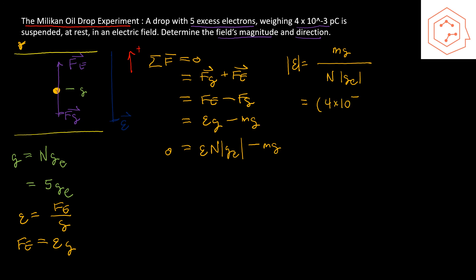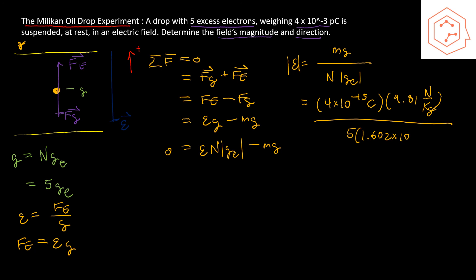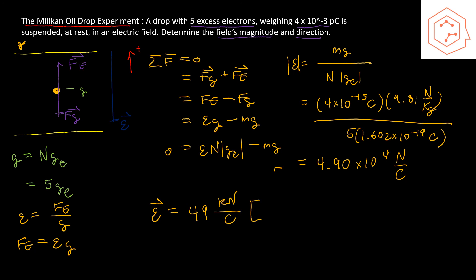Substituting values: the mass is 4 × 10⁻¹⁵ kg (since a picocoulomb is × 10⁻¹² — note this is the weight expressed as 4 × 10⁻¹⁵ in appropriate units), multiplied by 9.81 N/kg, divided by 5 × 1.602 × 10⁻¹⁹ coulombs. Plugging that into a calculator gives a final answer of 4.90 × 10⁴ newtons per coulomb, or approximately 49 kilonewtons per coulomb, in the downward direction.